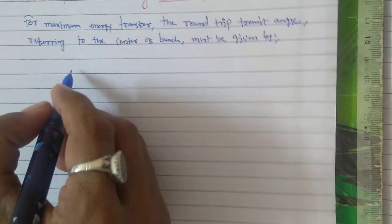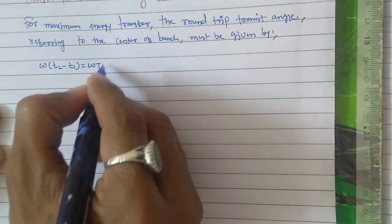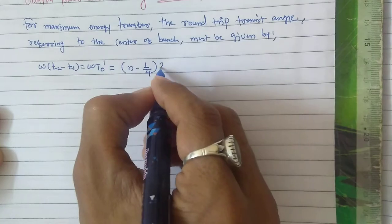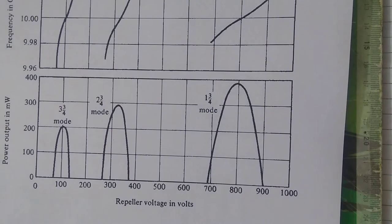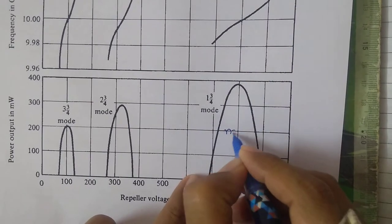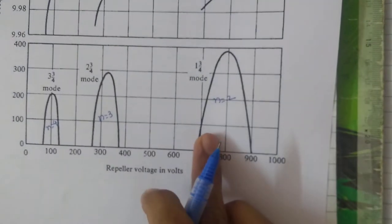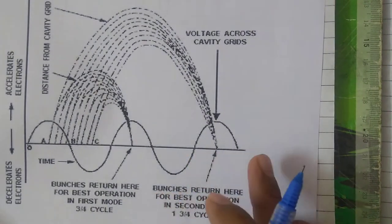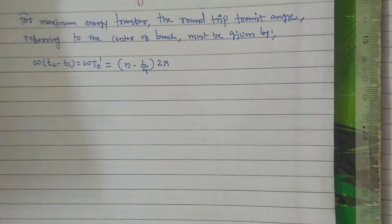The round trip transit angle, which we derived in the last video, is omega times (t2 minus t1). This should be equal to omega t0 dash — the DC transit time — into (n minus 1/4) times 2 pi. When we discussed the power versus frequency characteristics of the reflex klystron oscillator, mode n=2, n=3, and n=4 correspond to outputs obtained during successive positive half cycles, repeating in integer multiples of 2 pi.